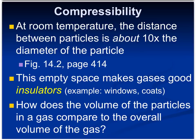At room temperature, the distance between particles is about 10 times the diameter of the particles. If you remember back to the kinetic molecular theory, we said that the size of the particles was insignificant in our measurements — and now we can see why. A cool fact is that this empty space makes gases good insulators. For example, double-pane windows have a special type of gas blown in between them to help insulate, keeping cold air in during summer and out during winter.